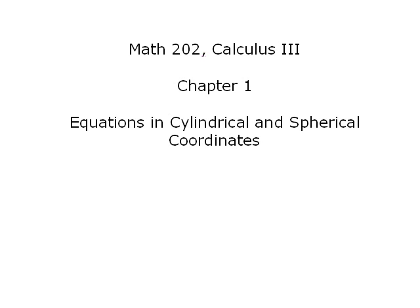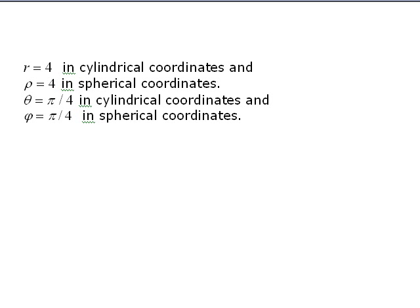This is a lecture on equations in spherical and cylindrical coordinates. In homework 1b, there were some questions. In fact, these were the questions: What are the shapes of the objects described by r equals 4 in cylindrical coordinates, or rho equals 4 in spherical, or theta equals pi over 4 in cylindrical, or phi equals pi over 4 in spherical coordinates? What kind of shapes do those describe?